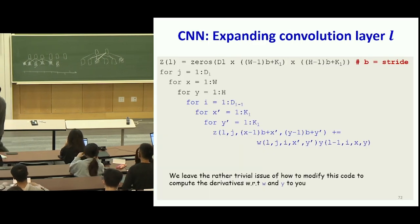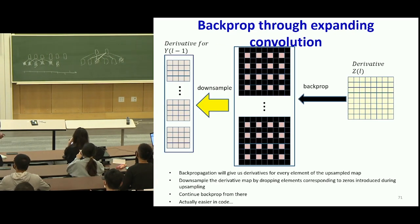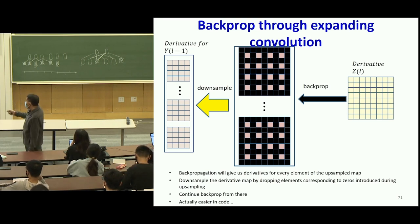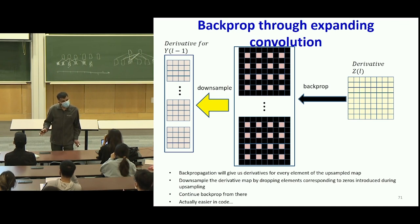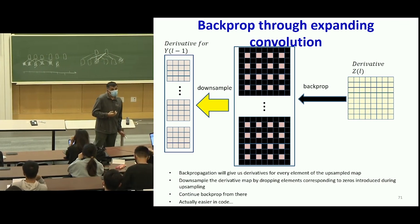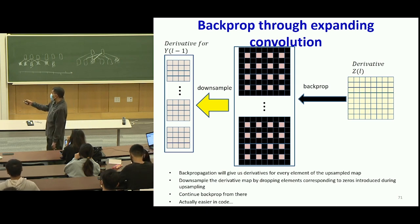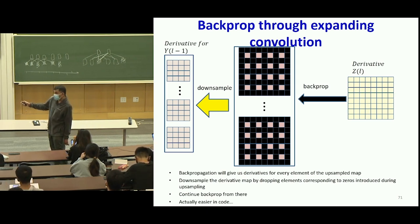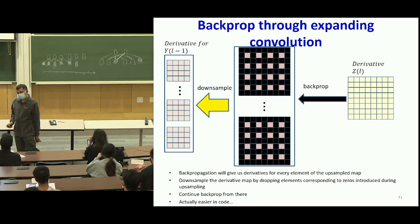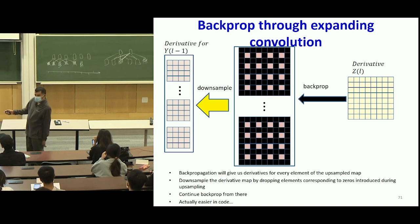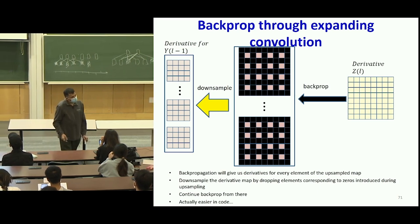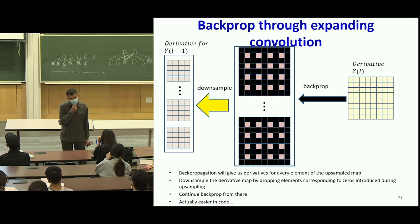Has everybody understood how to upsample going forward? Upsampling has a couple of uses: one is changing parameter sharing within convolutional operations, and another is actually increasing the size of output maps, which we'll encounter reasons for in a few lectures. For backpropagation through upsampling: when going forward you upsample the input maps and then scan to get outputs. When going backwards, you propagate derivatives to get derivatives for the upsampled map, then downsample those back to get derivatives for the original input maps.